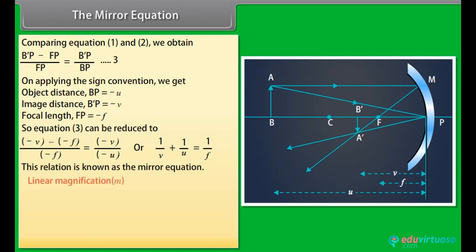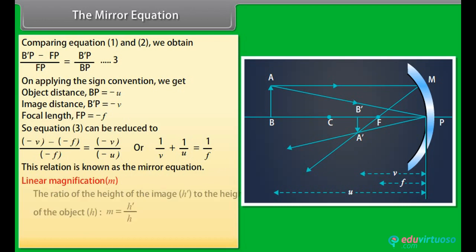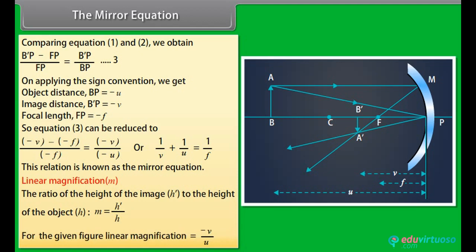Linear magnification m is the ratio of the height of the image h' to the height of the object h: m = h'/h. For a concave mirror, the linear magnification is m = −v/u.